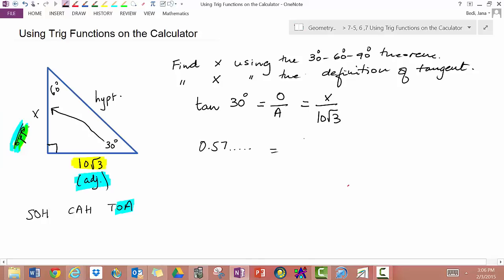And I'm going to say that equals x over 10√3. So if I want to solve for x, I have to multiply both sides by 10√3. So this will cancel. So x is equal to 10√3 times 0.57... Alright, back to my calculator.